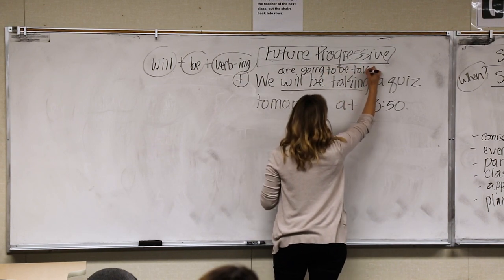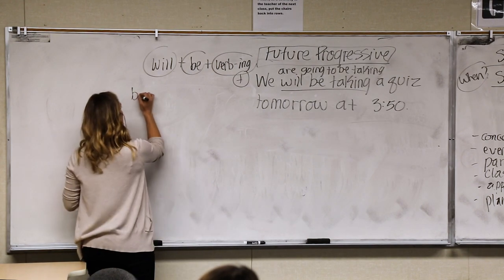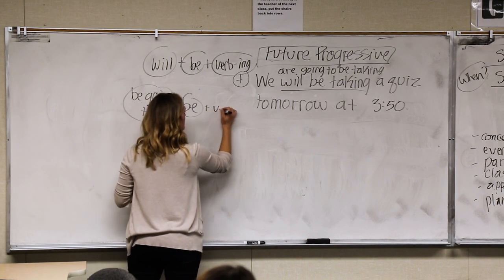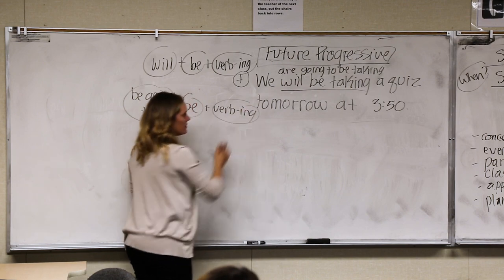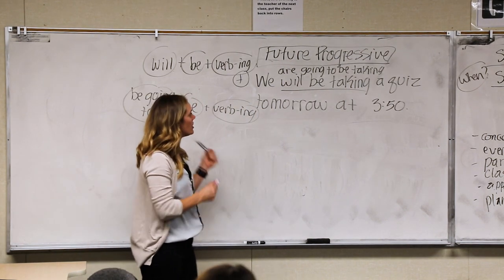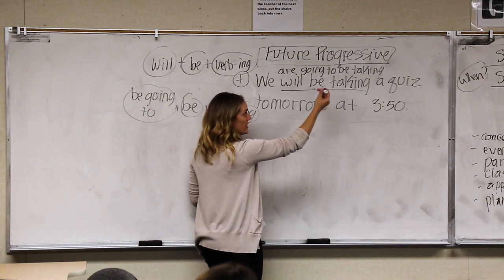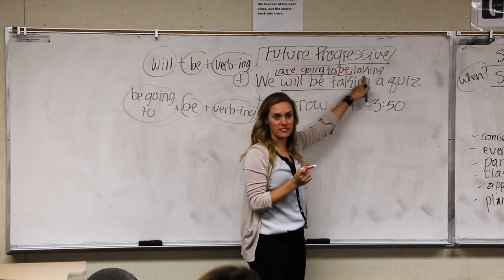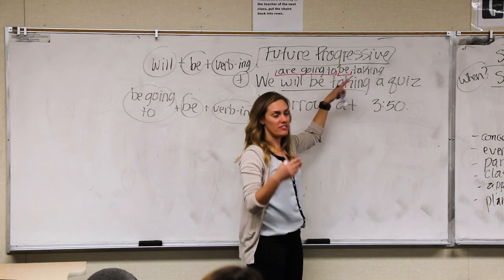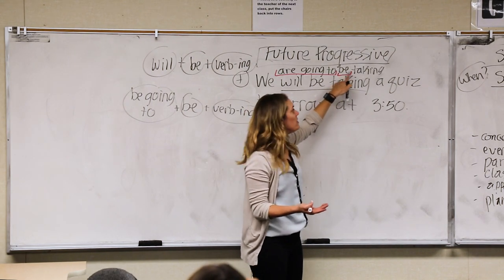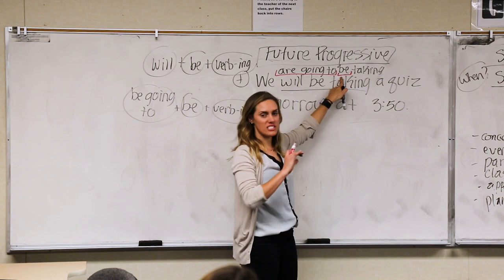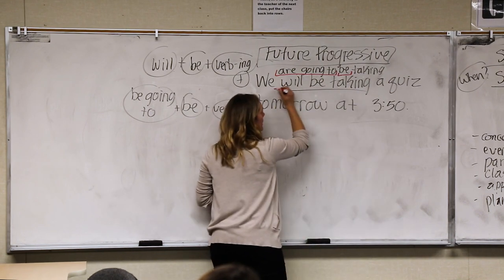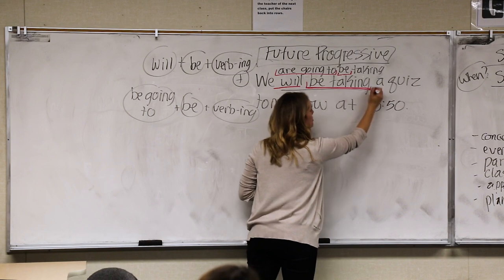Or it can also be: 'We are going to be taking' — so you can use will or be going to, plus be, plus verb-ing. You always need be before you use progressive. If it's past progressive, present progressive, or future progressive, you always use be. After to, you always need base form — don't change it.